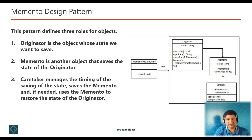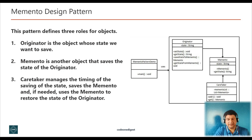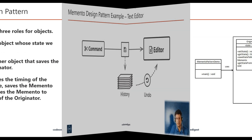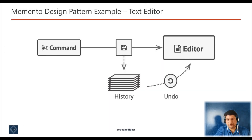The three roles are: Originator — the object whose state will be saved; Memento — another object that saves the state of the originator; and Caretaker — which manages the timing of saving the state and, if needed, uses the Memento to restore the state of the originator.